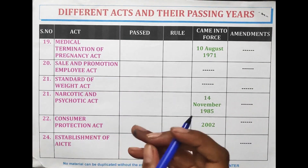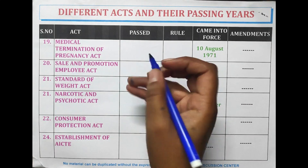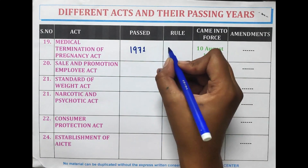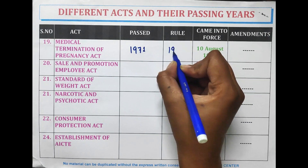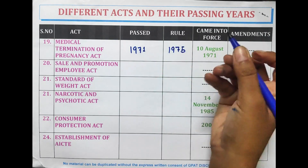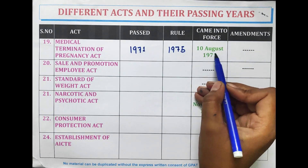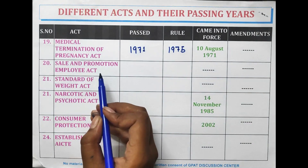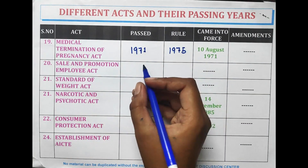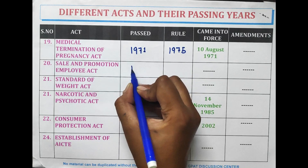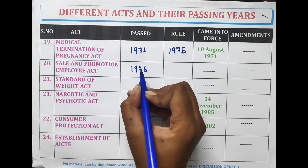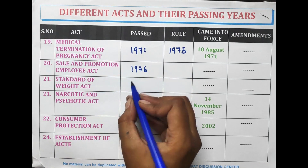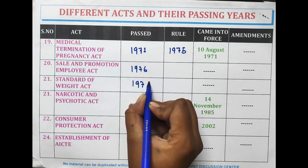The Medical Termination of Pregnancy Act was passed in 1971 and the rules in 1975, came into force on 10 August 1971. The Sale and Promotion Employee Act was passed in 1976. The Standard of Weight Act was also passed in 1976.